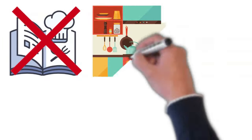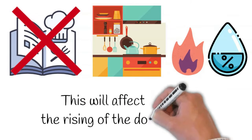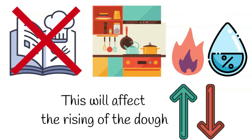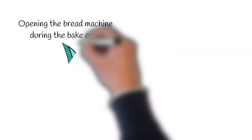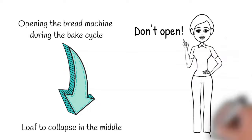If your kitchen is too warm or too humid, this will affect the rising of the dough, meaning that it rises too quickly and then collapses. Opening the bread machine during the bake cycle can also cause the loaf to collapse in the middle, so don't open the lid while the bread is baking.